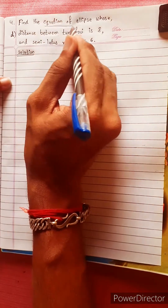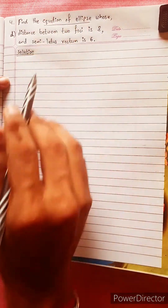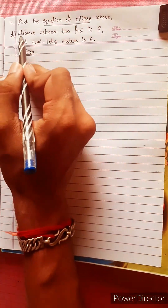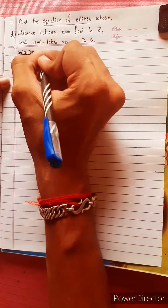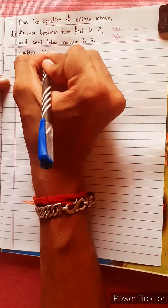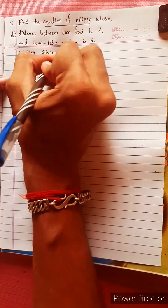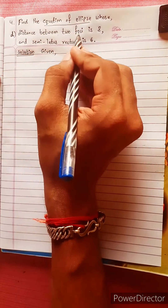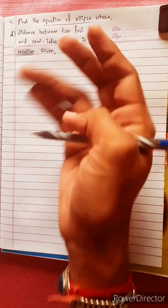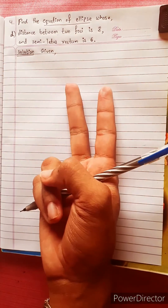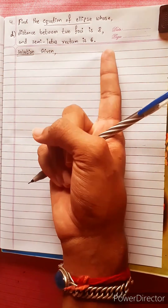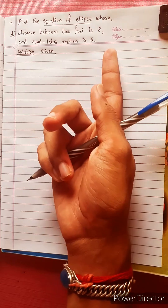I'm going to show you how to find the equation of an ellipse. Given: the distance between the two foci is at a certain distance.